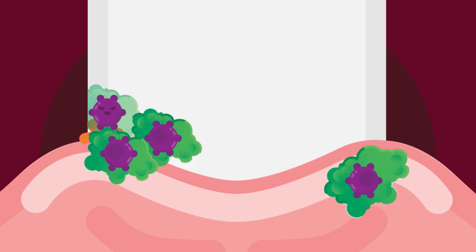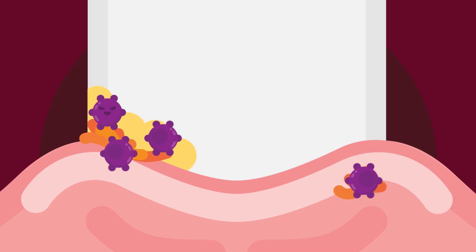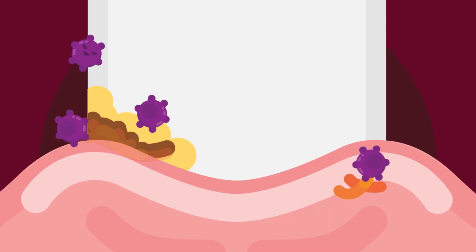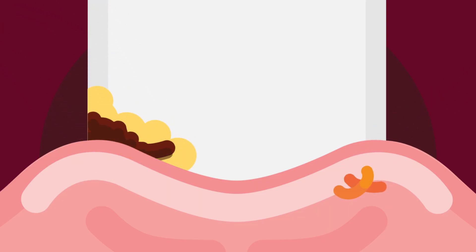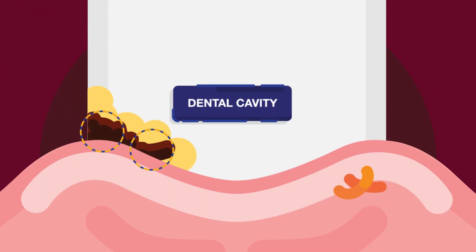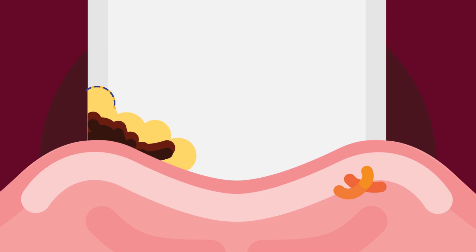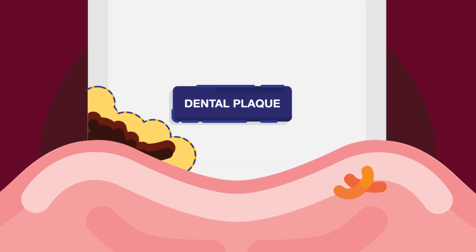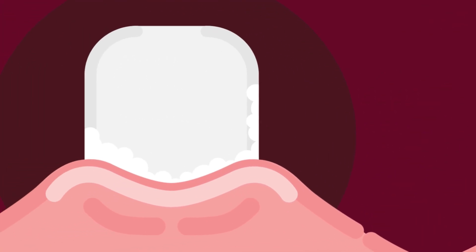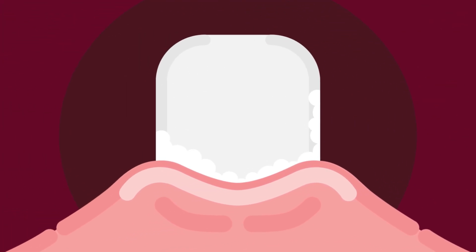These acids can eat away the tooth's hardest surface — the enamel — forming the wound in the tooth that we notice as the dental cavity, and the surrounding devastating sticky transparent film of microbes as dental plaque.